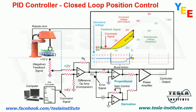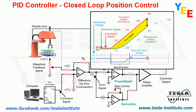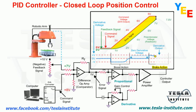As the command signal stops changing, the robotic arm continues to move with a decreasing error signal. As the error is reduced, the derivative amplifier output voltage changes polarity and cancels the proportional voltage. When this occurs, the polarity of the power amp is reversed, creating a brake condition to prevent overshooting the desired position.